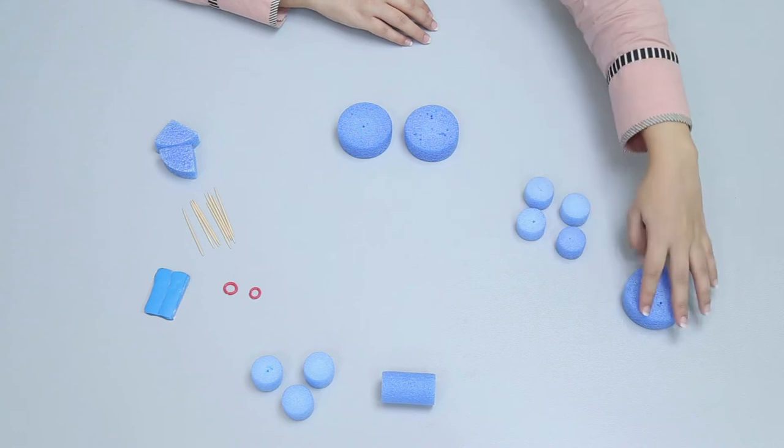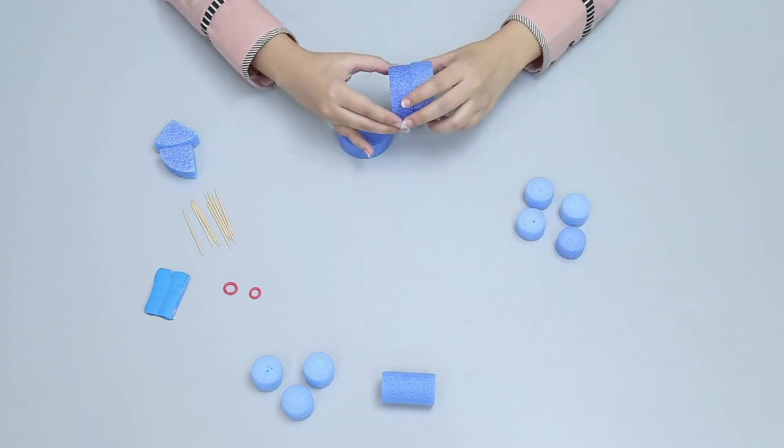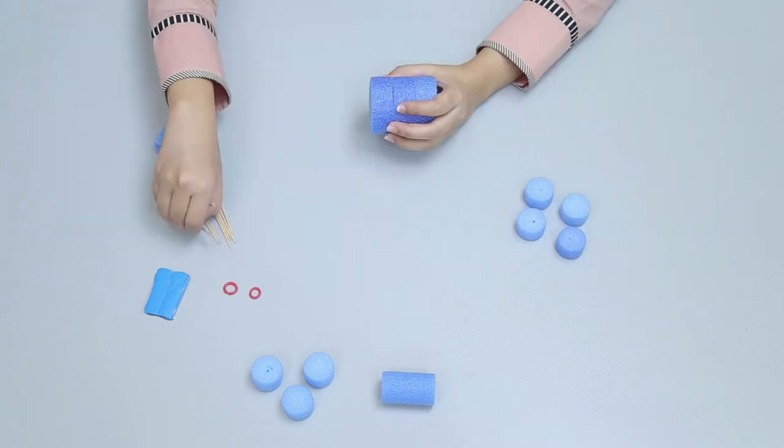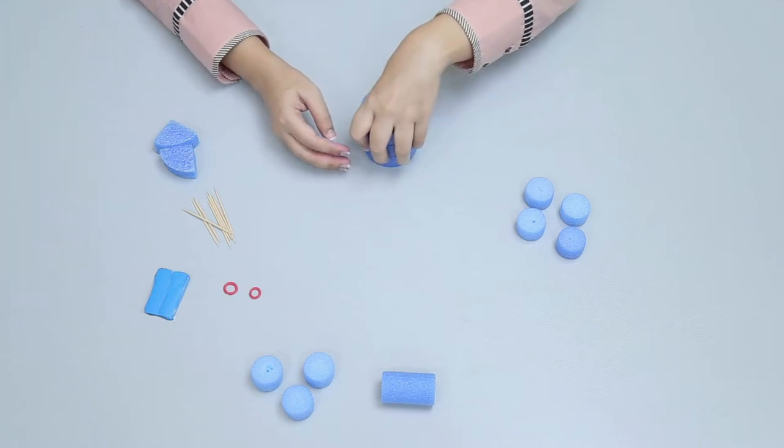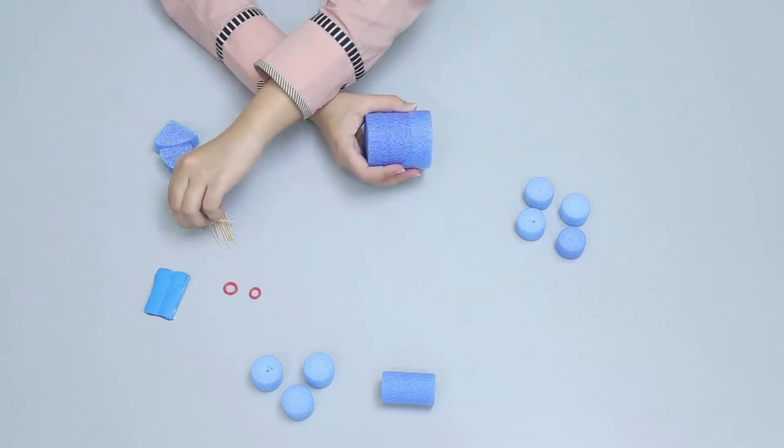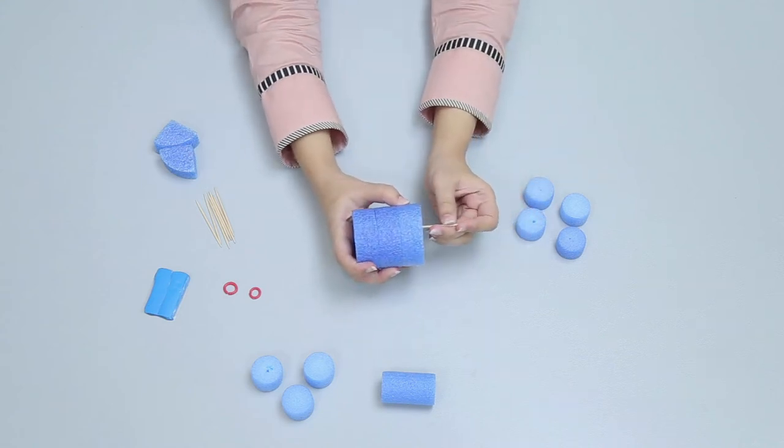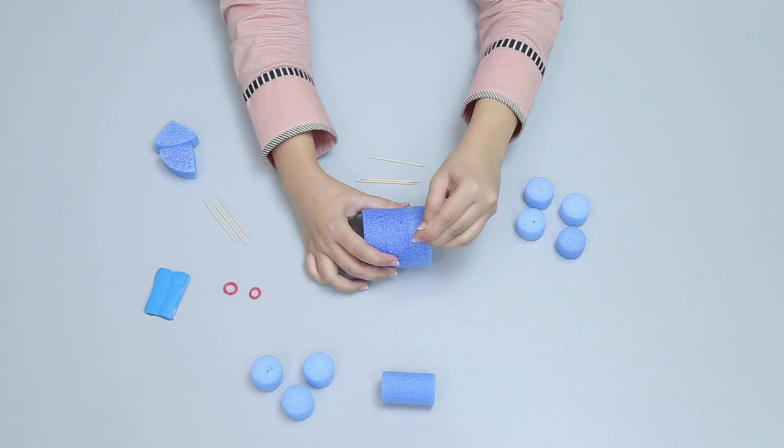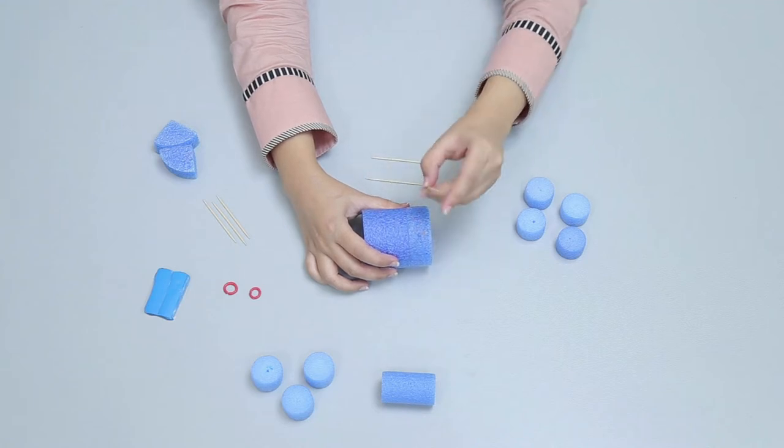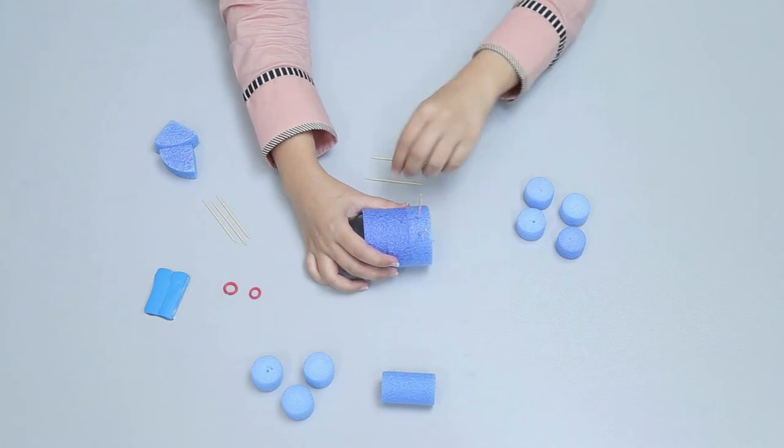Take three foam wheels and attach them together with toothpicks to make one bigger foam cylinder. Attach four toothpicks on the bottom of the bigger foam cylinder.